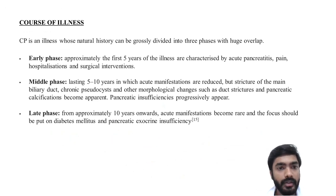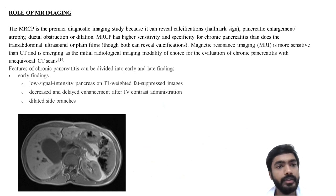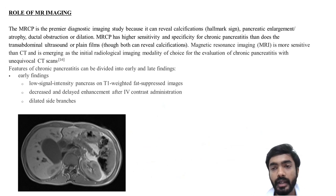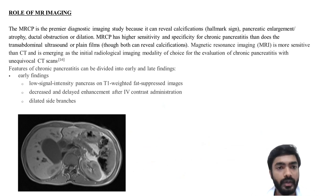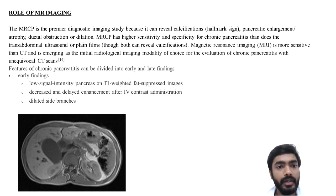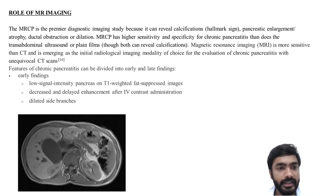The course of illness: the early phase is approximately the first five years; the middle phase is five to ten years; and the late phase is approximately ten years onwards. MRCP is the premier diagnostic imaging study because it can reveal calcifications — a hallmark sign — pancreatic atrophy, or ductal obstruction and dilatation. MRCP has higher sensitivity and specificity than transabdominal ultrasound or plain films. MRI is more sensitive than CT and is emerging as the initial radiological imaging modality of choice for chronic pancreatitis evaluation.